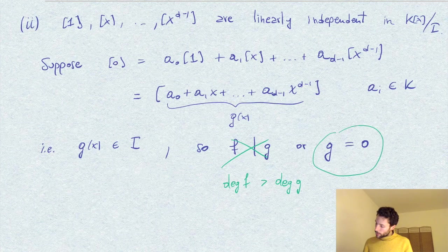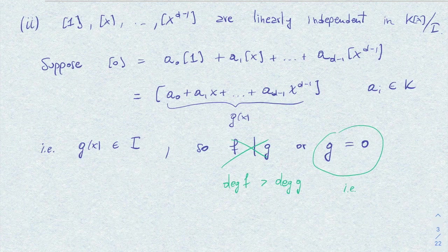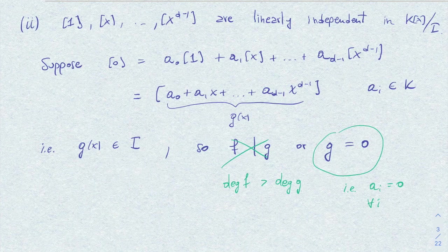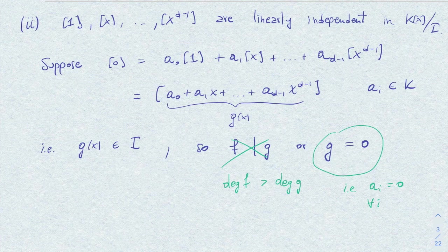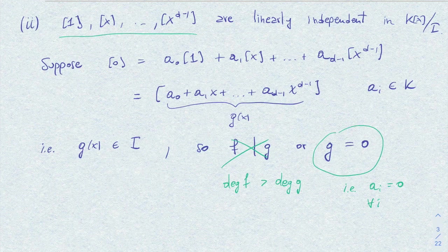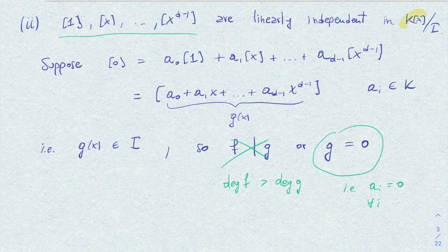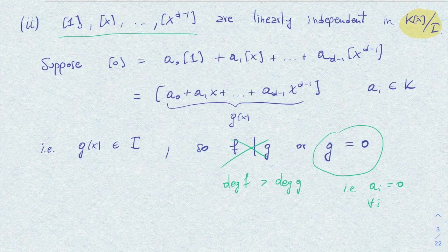Therefore, g has to equal 0, which means all a_i are 0. Our relation shows that all these coefficients are 0, so the elements 1, x, ..., x^(d-1) are linearly independent in k[x]/(I). In particular, we've proven that this quotient as a vector space over k has dimension d, and this is a handy natural basis for this vector space.